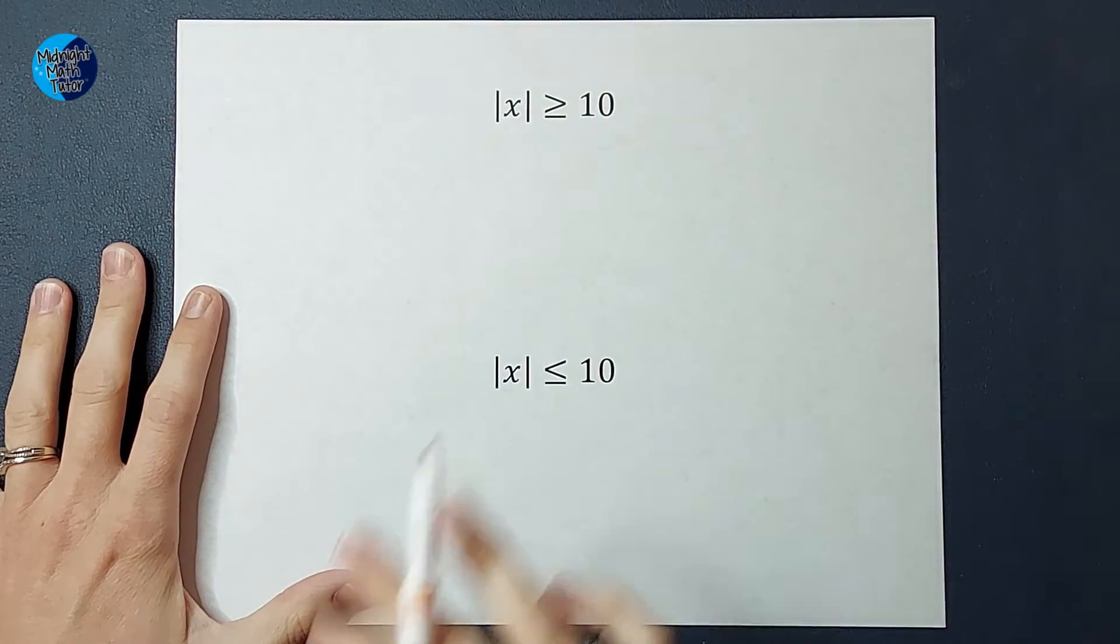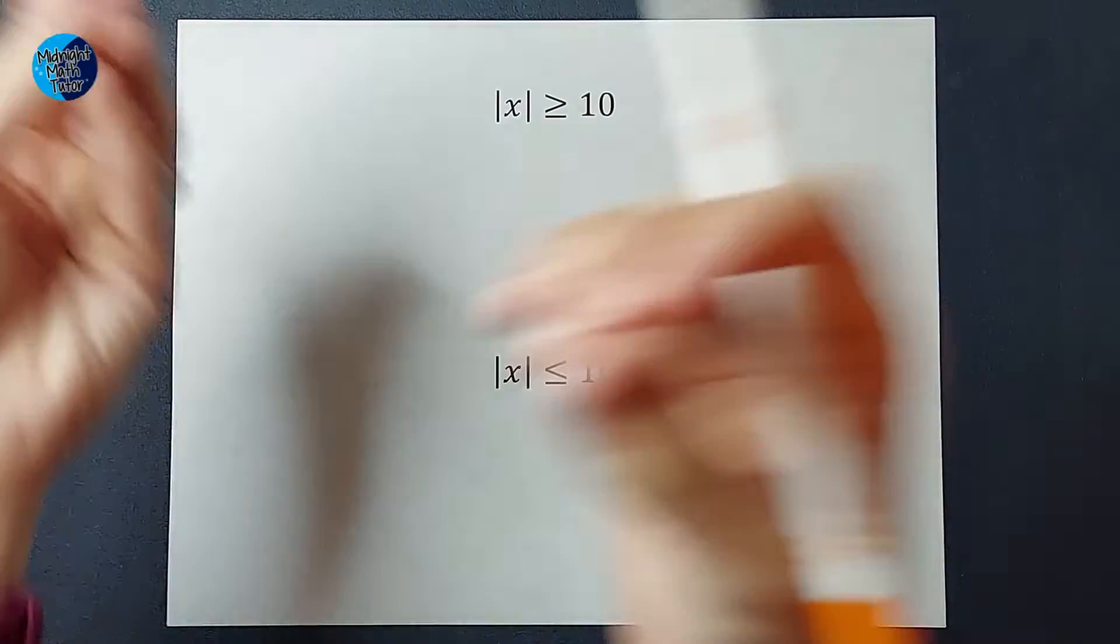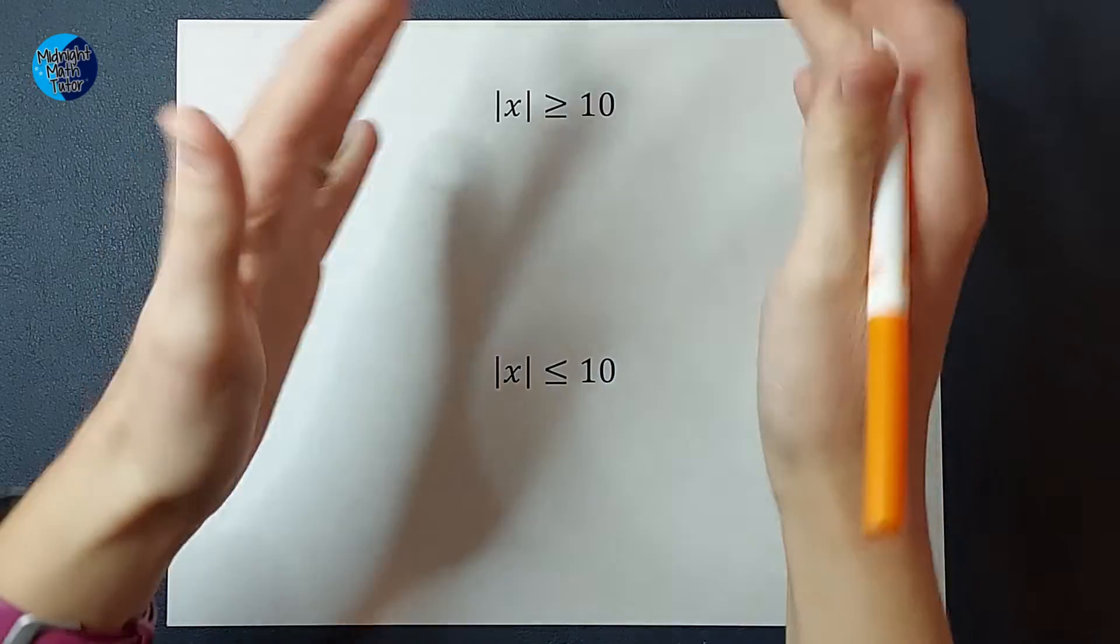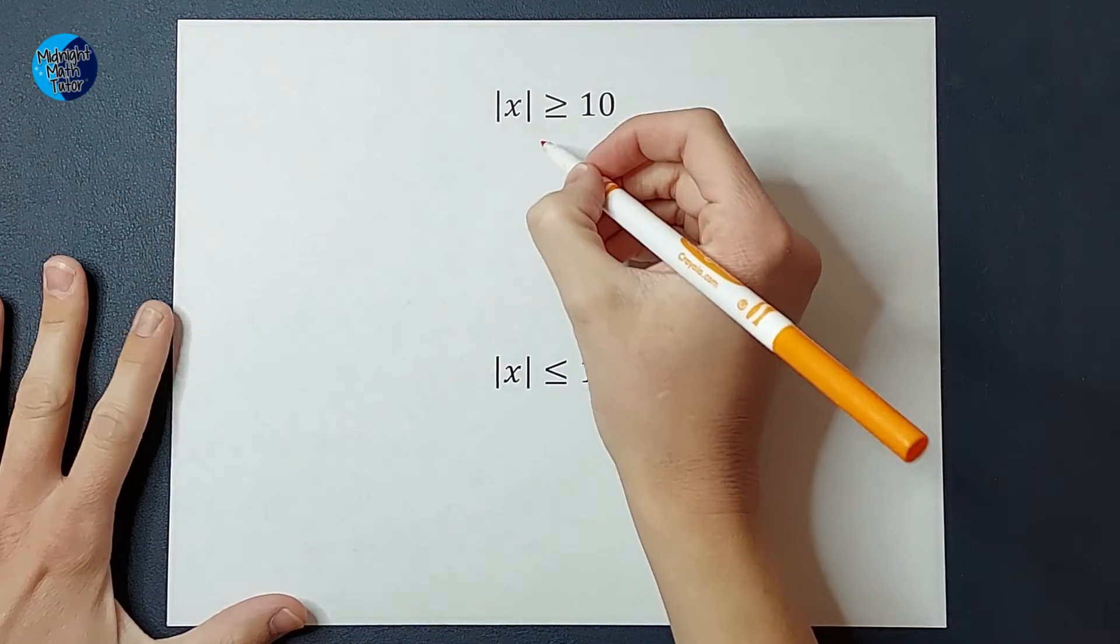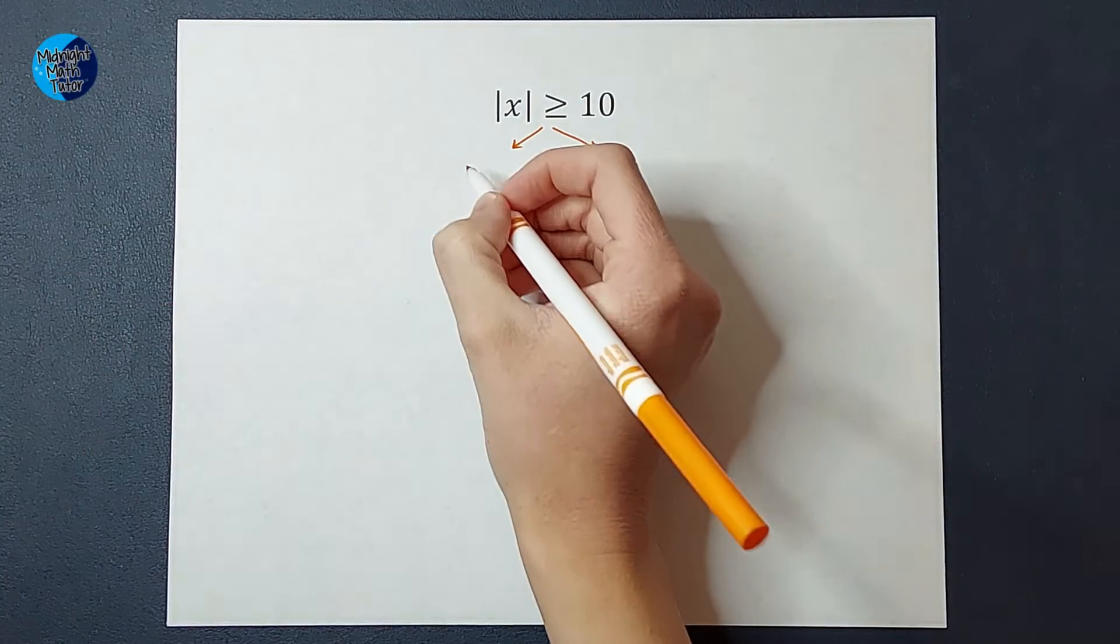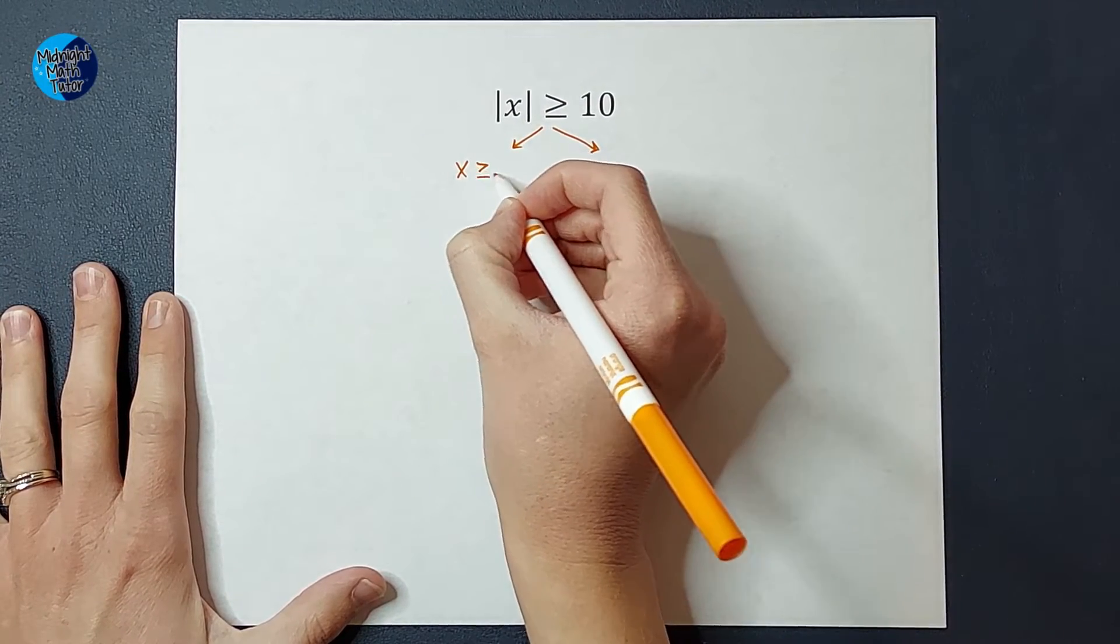So if we were trying to solve this, I know these are really simple, but it's to illustrate a point, and then it applies to the more complex ones. So if I were to do this with splitting it off into two, for the first one, I drop the absolute value bars and just keep everything the same. X is greater than or equal to 10.